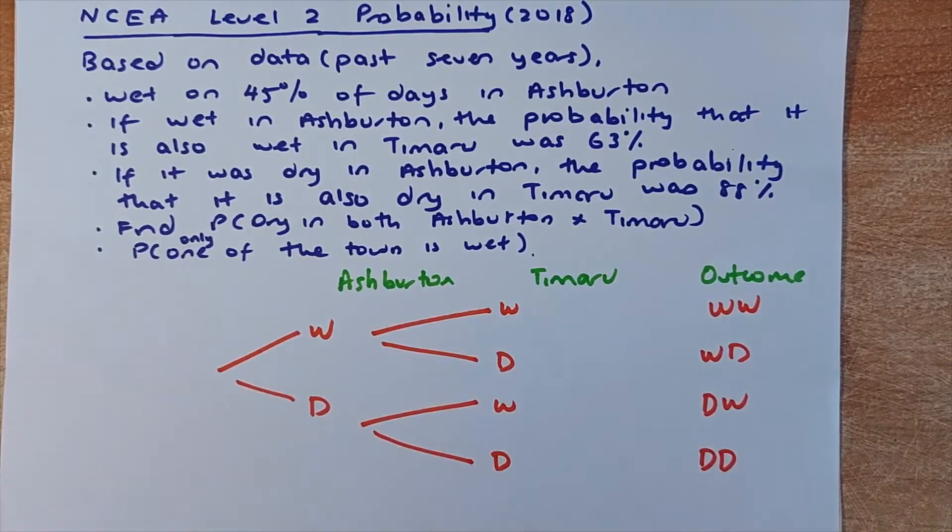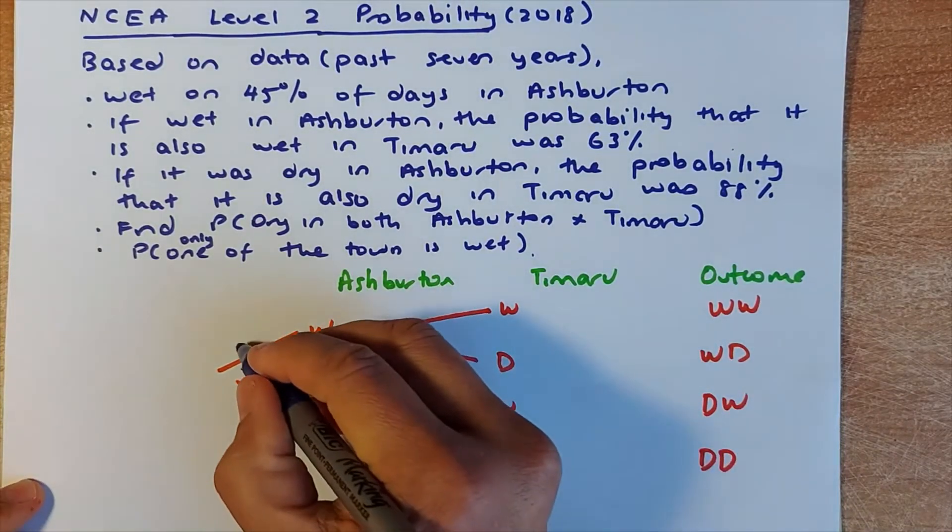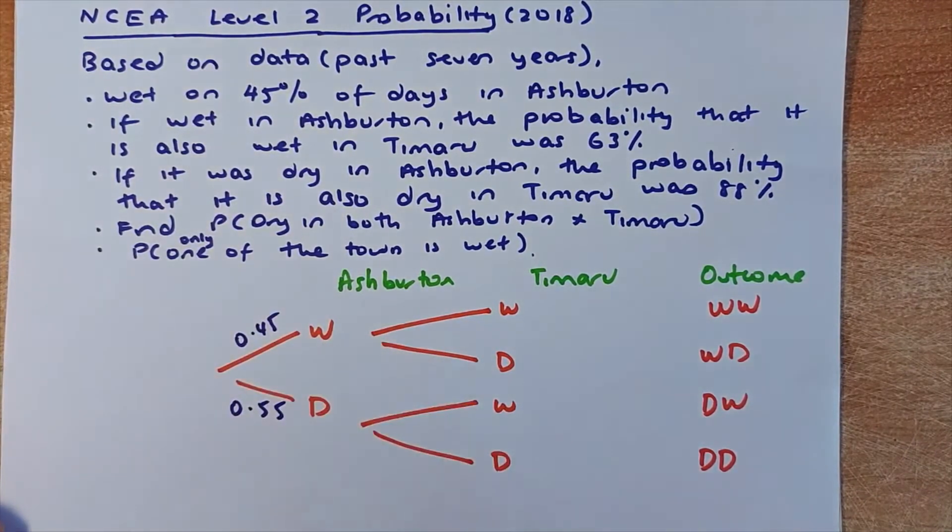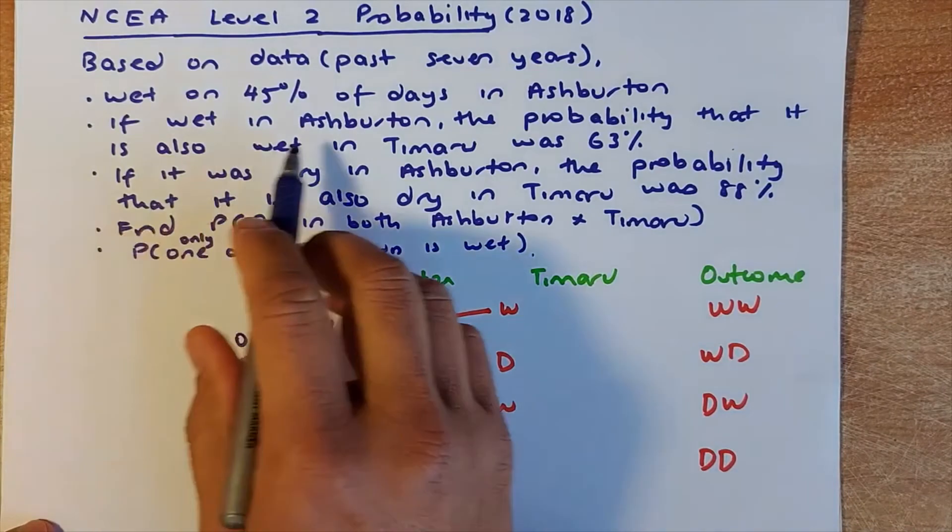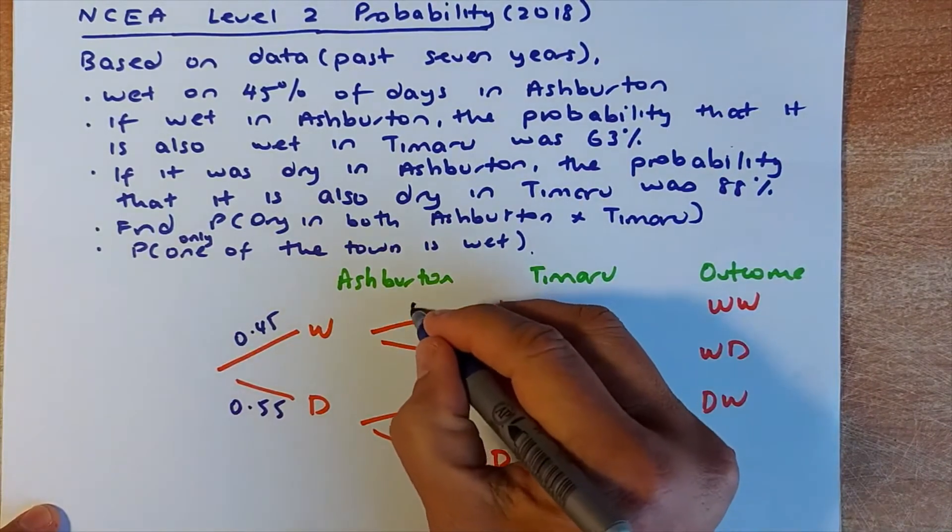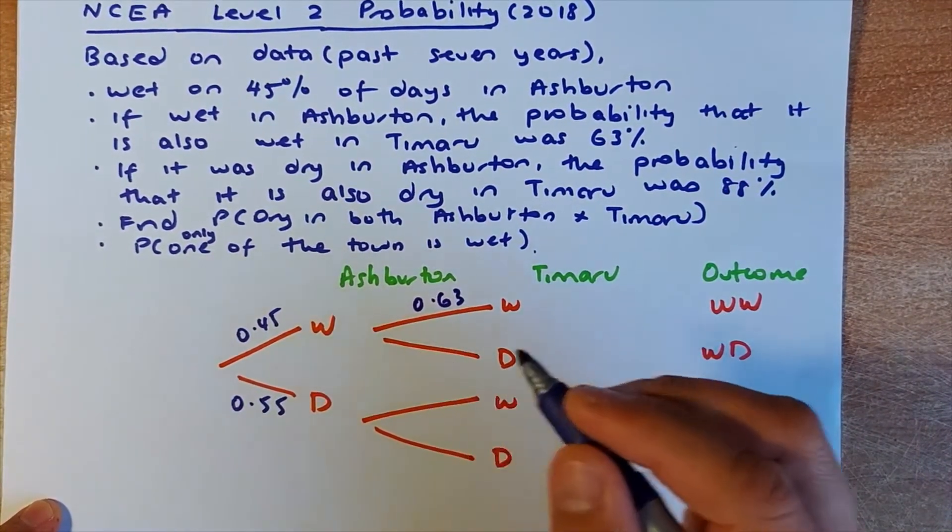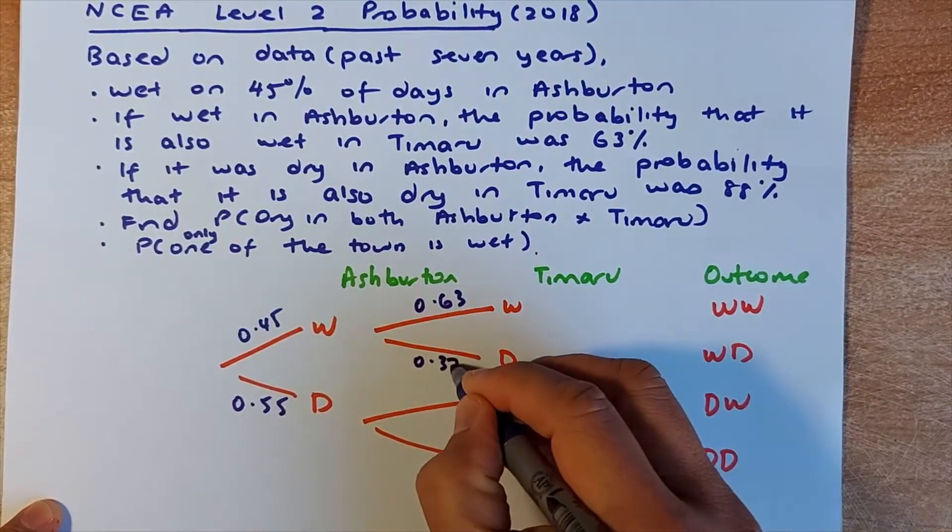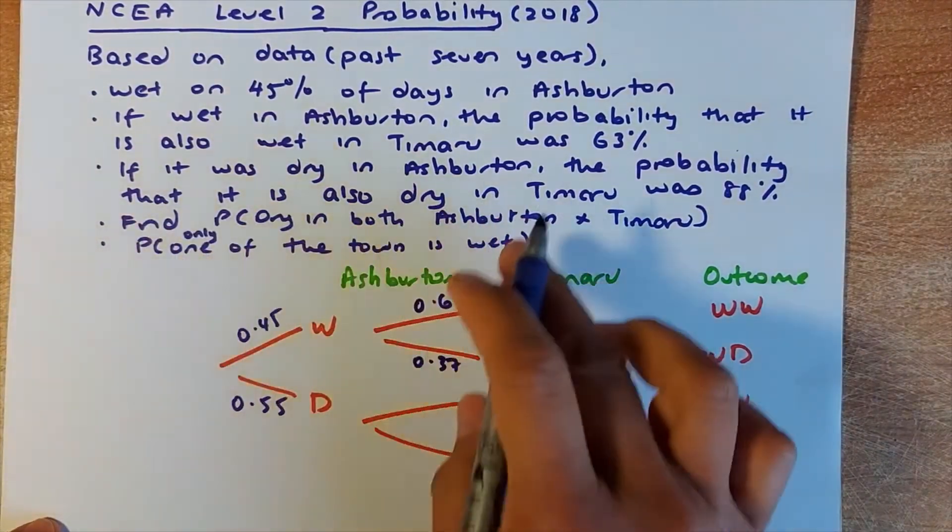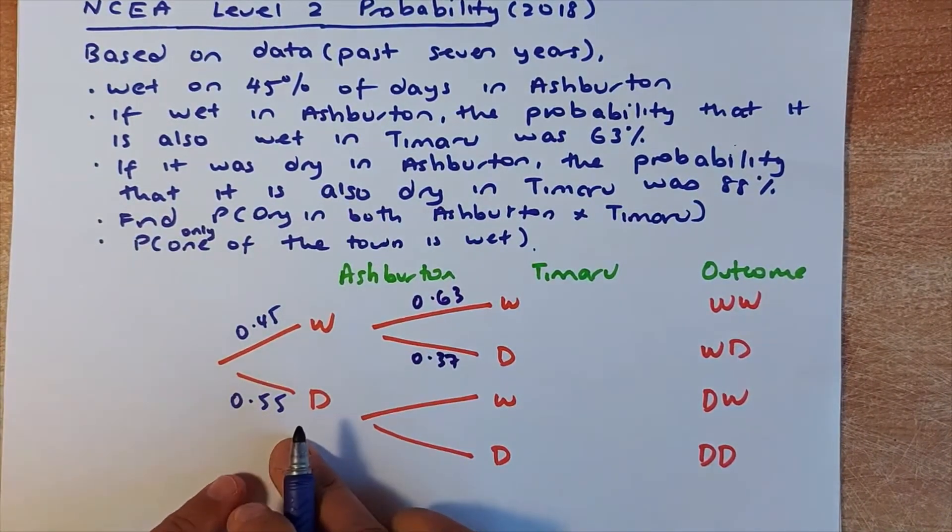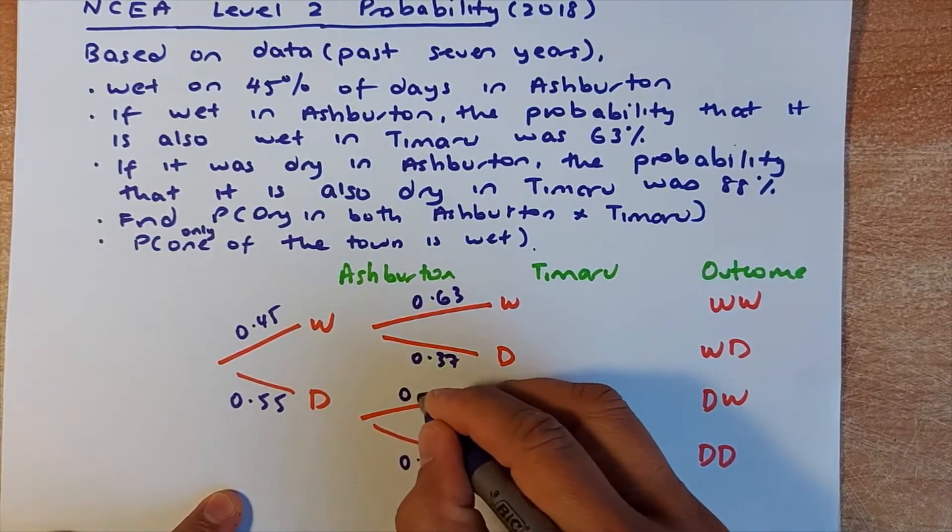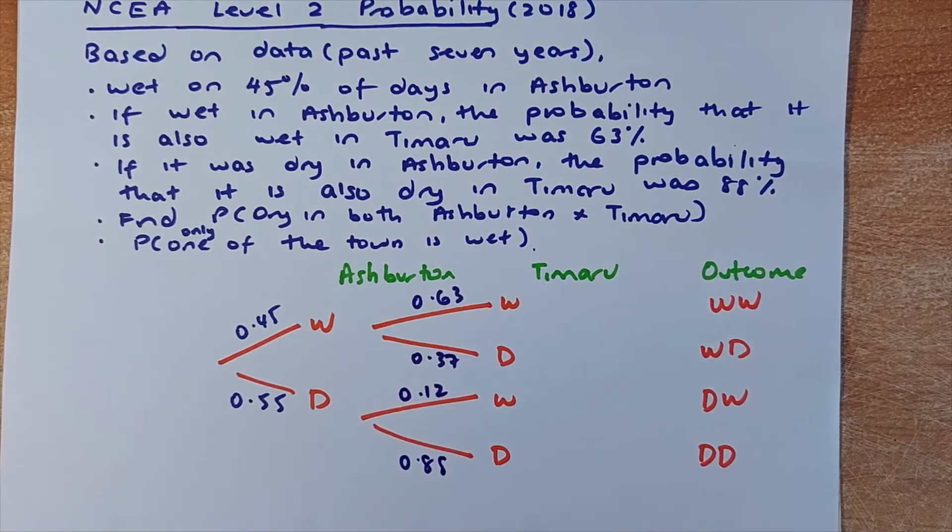We are going to put in the probability now. So they say 45% is wet in Ashburton, so 0.45. So this must be 0.55 because it must add up to 1. Similarly, the next part they say, if it's wet in Ashburton, the probability that it's also wet in Timaru is 0.63. And then if you minus them, it's going to be 0.37. And then the next line, if it was dry in Ashburton, the probability that it's also dry in Timaru is 0.88. So 0.88 here. And to get 1, you minus 1 from it is 0.12.